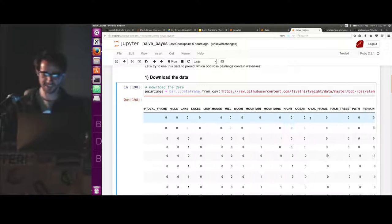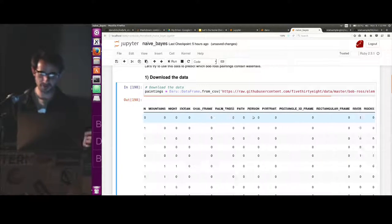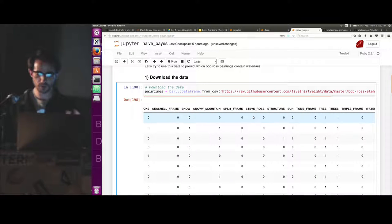So somewhere through here, there is a waterfall variable. So we're going to pull that out and use that as the thing we're trying to predict. Like, does a painting contain waterfalls?